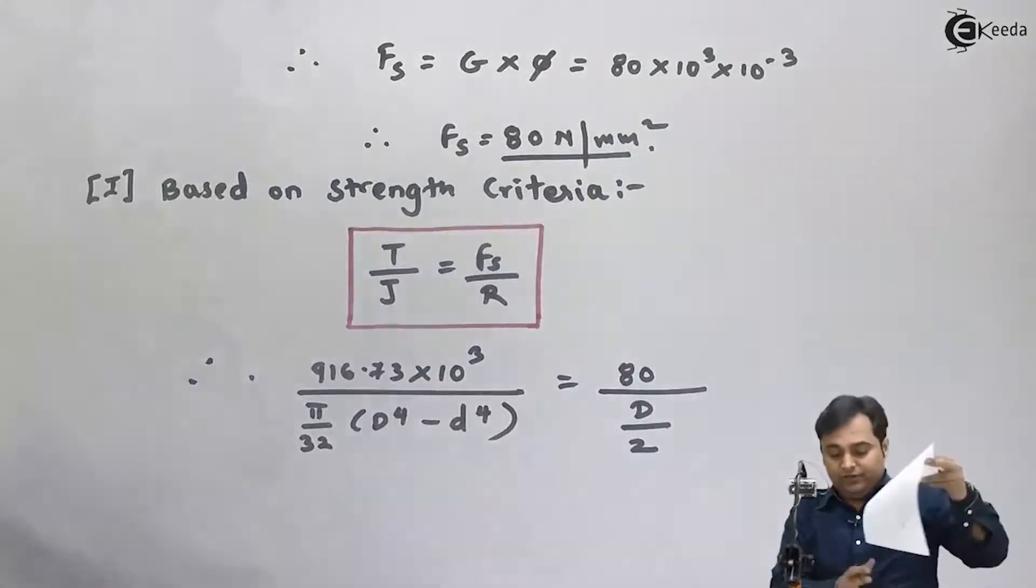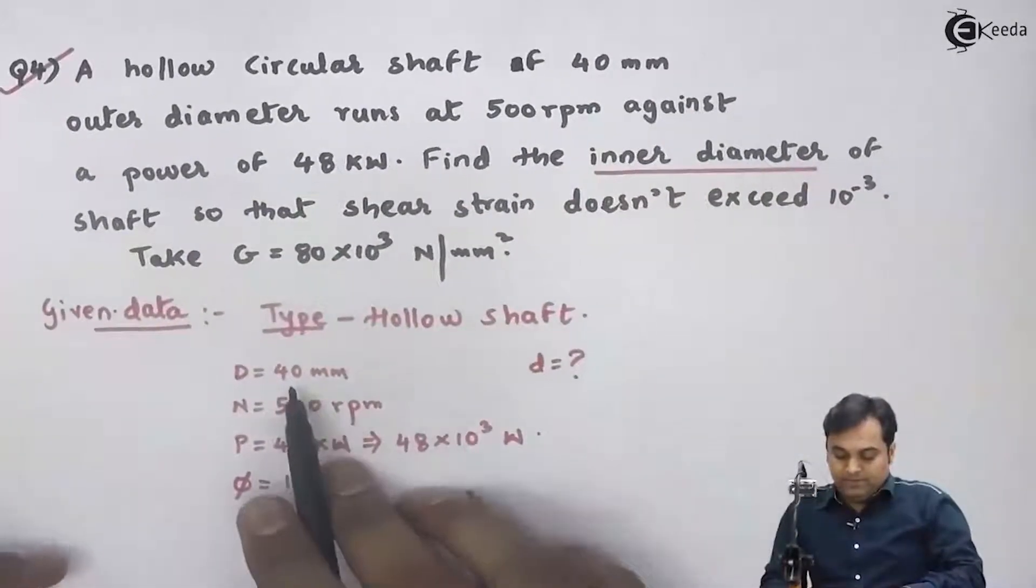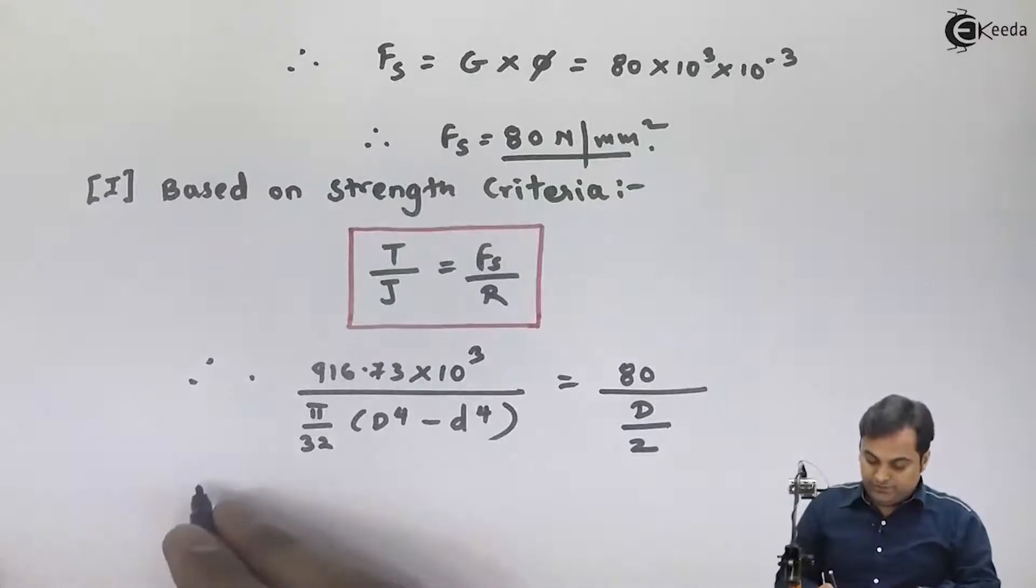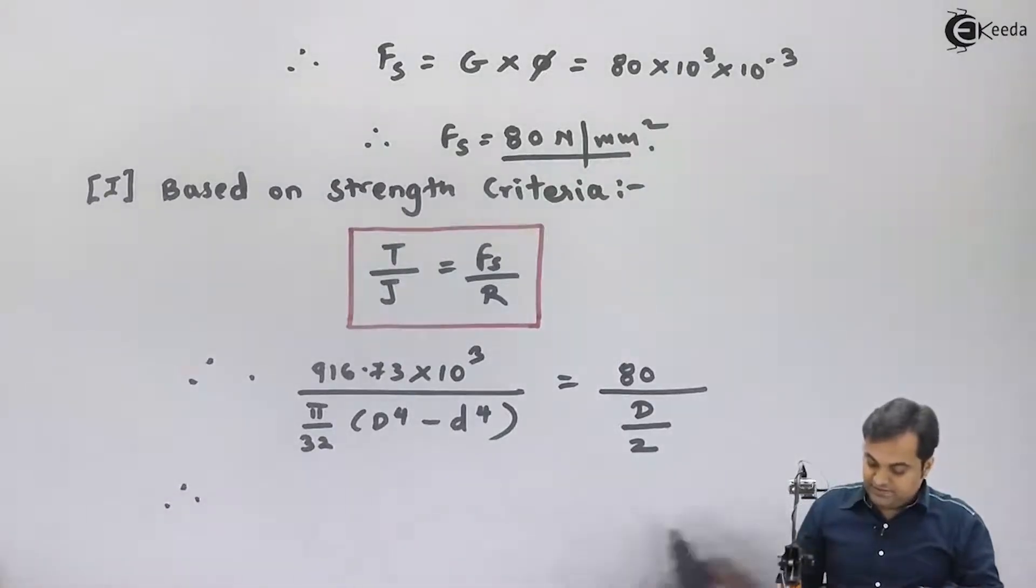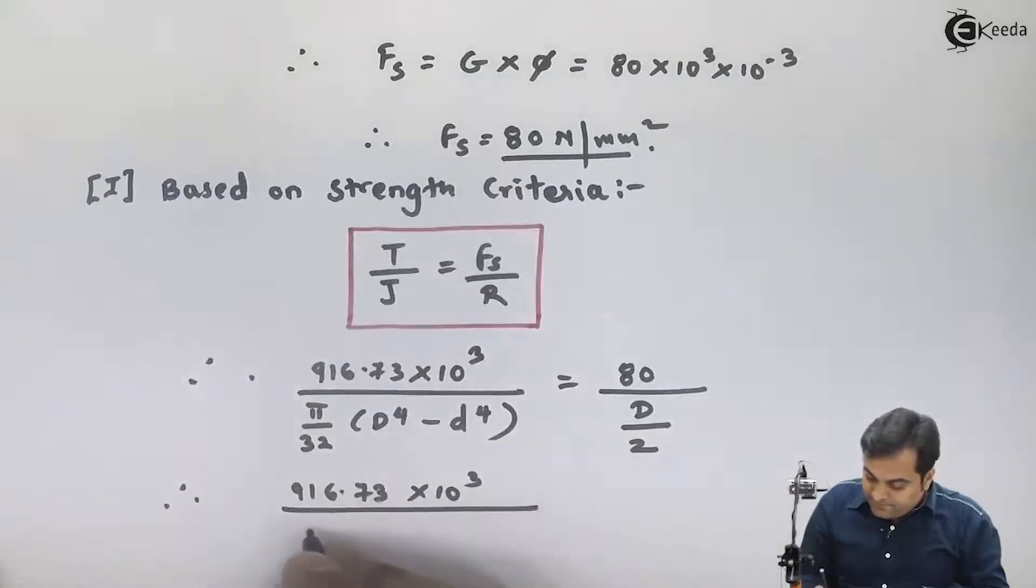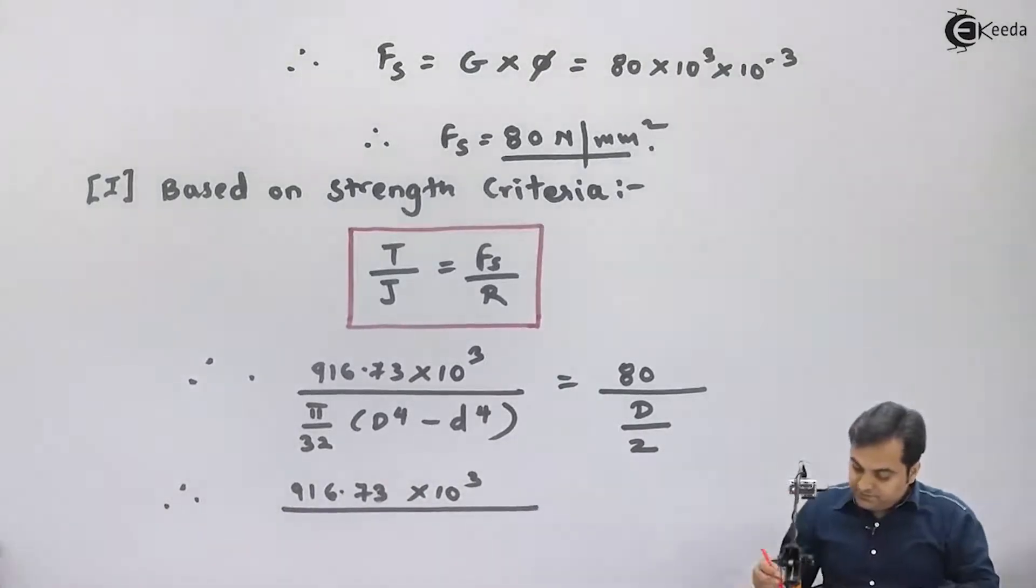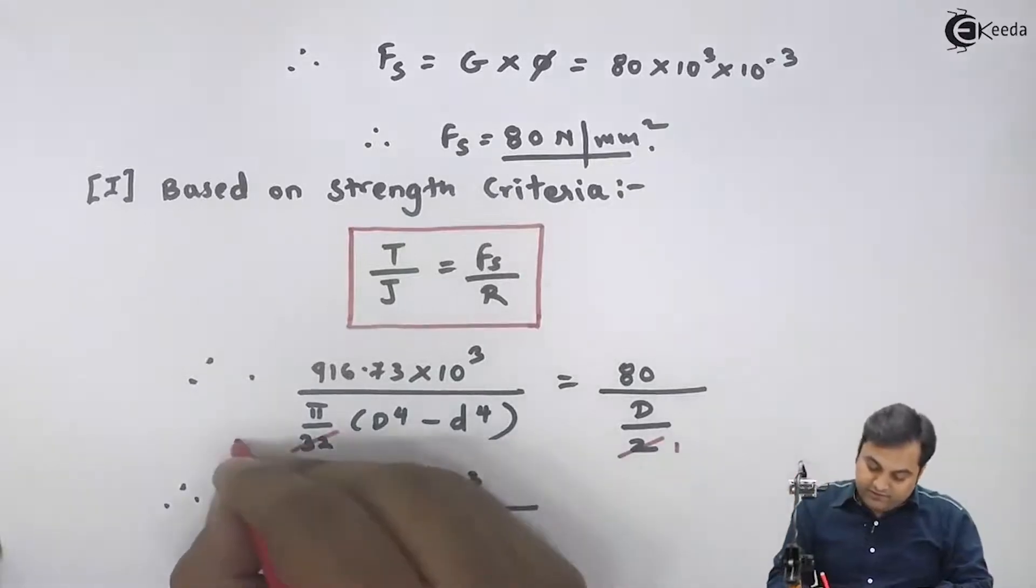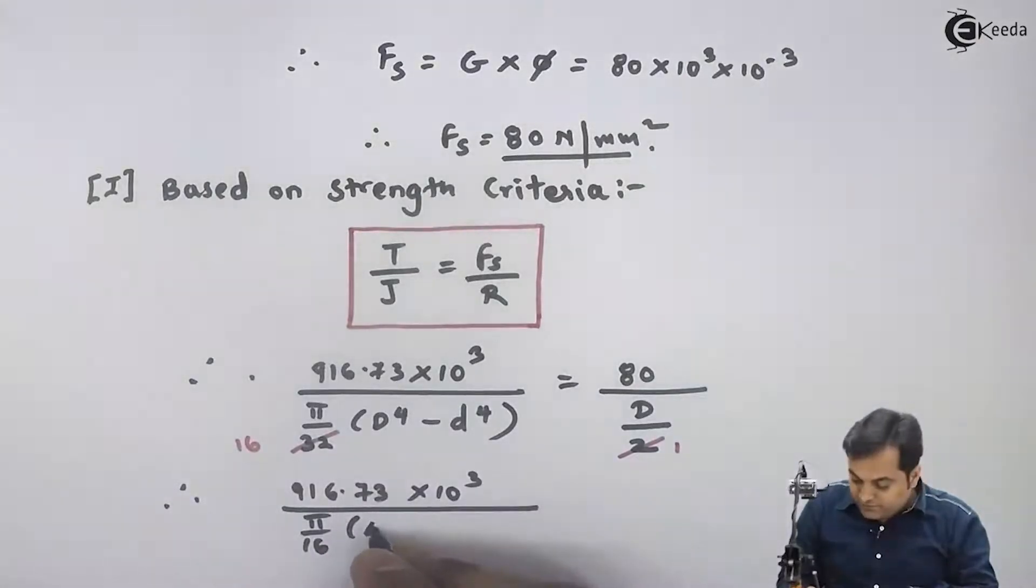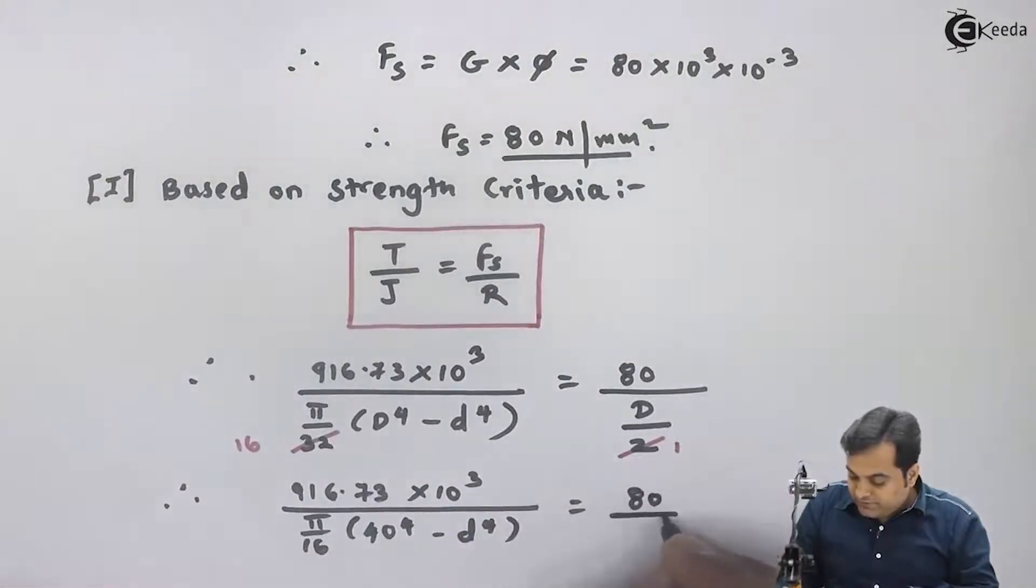In the question they have given the value of capital D, that is outer diameter, and telling us to calculate small d, inner diameter. So here I'll write this as 916.73 times 10 to the 3 divided by this. And from left hand side and right hand side if I do the calculation, here I have π by 16, capital D is given in the question as 40, minus small d to the 4 equals 80 divided by 40.